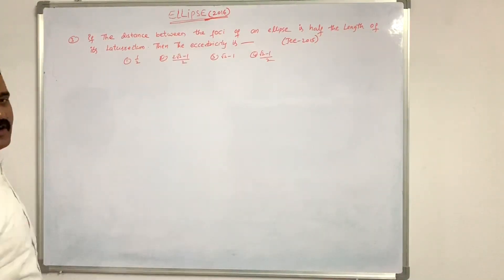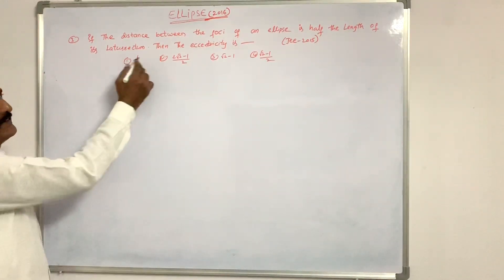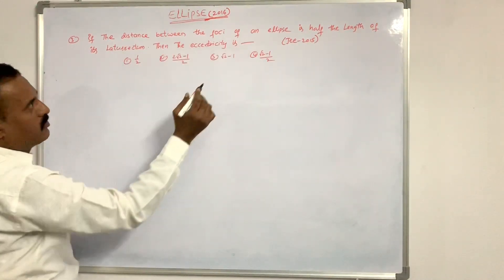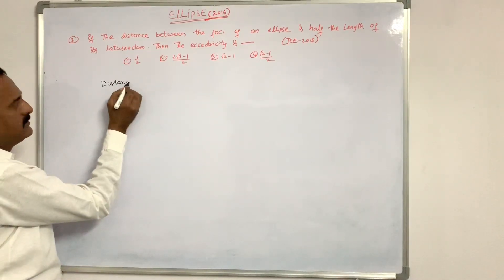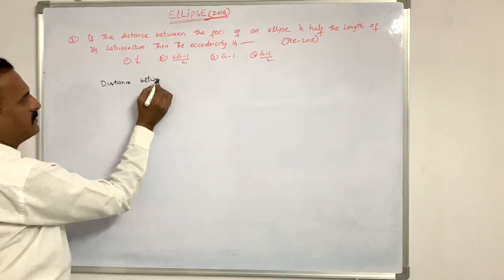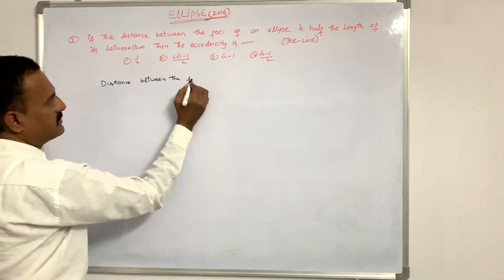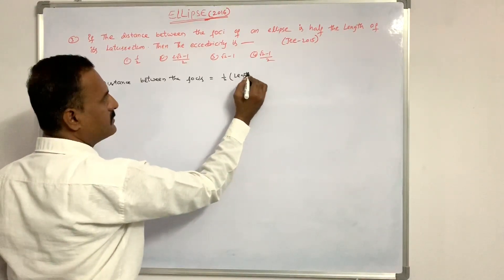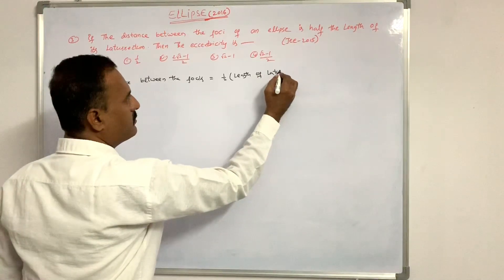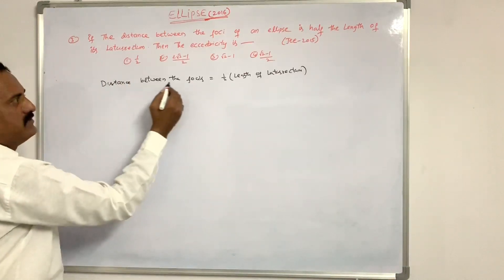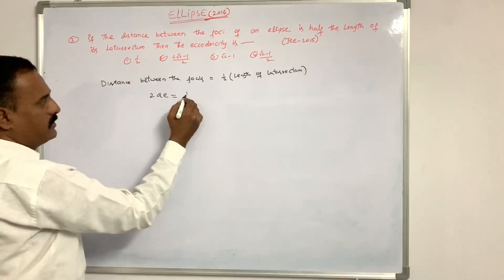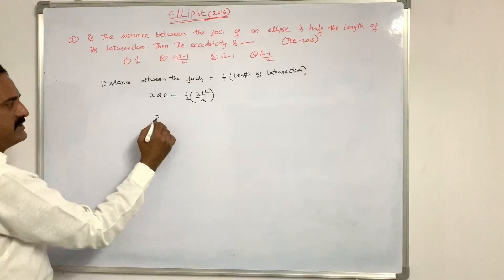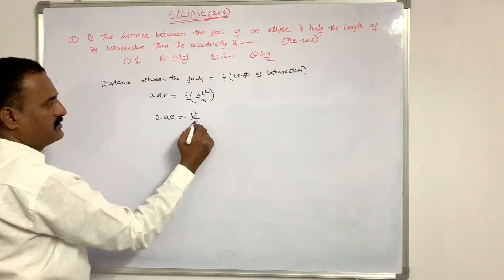The distance between the foci of a hyperbola is half of the length of the latus rectum. Find the eccentricity. Given: distance between foci = half of length of latus rectum. That is 2Ae = (1/2)(2B²/A), so 2Ae = B²/A.